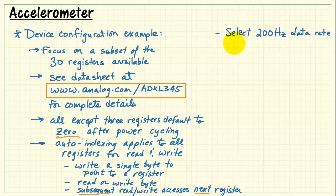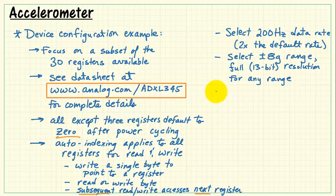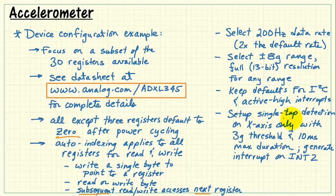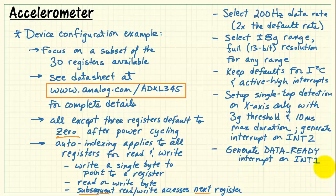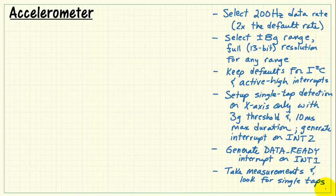I want to select a 200 Hz data rate, which is twice the default rate. I would like to select a plus minus 8G range and maintain full 13-bit resolution. I want to keep the defaults for I2C data transfers and active high interrupts, and then set up a single tap detection on the x-axis exclusively with a 3G threshold and 10 millisecond maximum duration. I'll generate this input on output pin interrupt 2. I also want to generate a data ready interrupt on the output interrupt number 1. After that, we'll take a look at taking measurements and also looking for single taps.